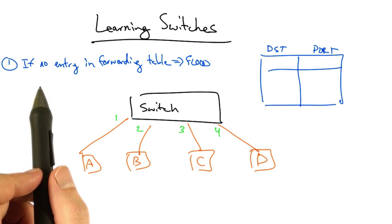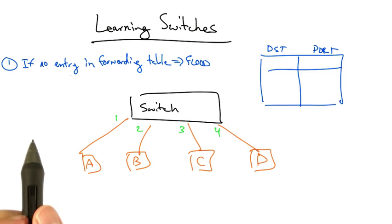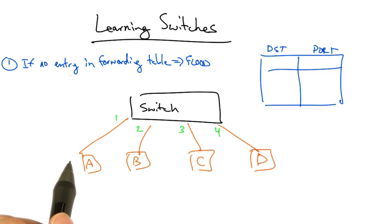Initially, the forwarding table is empty. So if there's no entry in the forwarding table, the switch will simply flood.